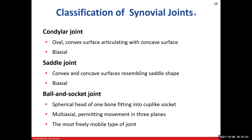Condylar joints are biaxial — two movement planes or axes. One surface is oval and the other is convex, fitting together. An example is the atlanto-occipital joint, where C1 (the atlas) has lateral masses that articulate with the occipital condyles on the base of the occipital bone.